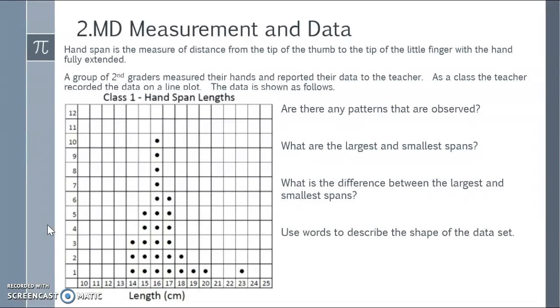Hand span is the measure of distance from the tip of the thumb to the tip of the little finger with the hand fully extended. A group of second graders measured their hands and reported their data to the teacher. As a class, the teacher recorded the data on a line plot. The data is shown as follows. You see along the bottom is the hand length in centimeters, and then for each student we just kind of added another dot so that we could count how many there are. So let's just start. How many students were in the class? Well, I can count that there are 1, 2, 3, 4, 5, 6, 7, 8, 9, 10, 11, 12, 13, 14, 15, 16, 17, 18, 19, 20, 21, 22, 23, 24, 25, 26, 27, 28, 29 students in the class.